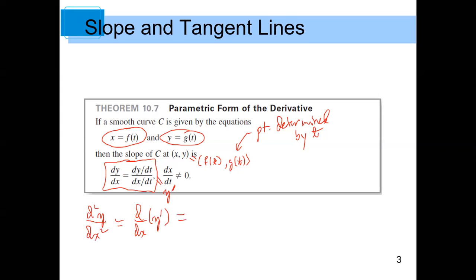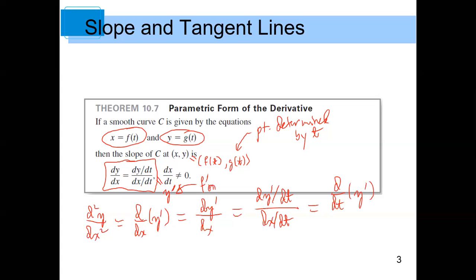So then what you would do to get this is just say it's dy prime/dt divided by dx/dt. What this is saying is you need to take the derivative with respect to t of y prime. And after all, y prime is going to be a function of t — we just converted everything into t. So y prime is a function of t, therefore it's possible to take the derivative of y prime with respect to t. This is over dx/dt. Basically, y is now replaced by y prime in this equation.